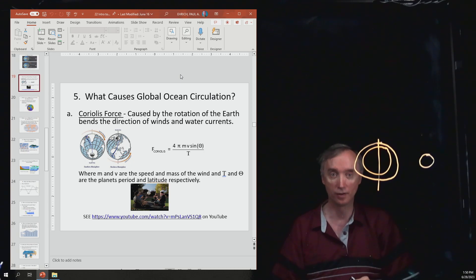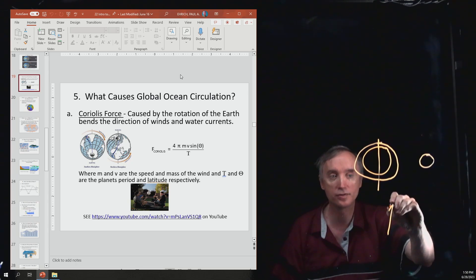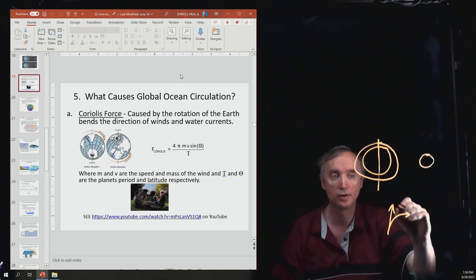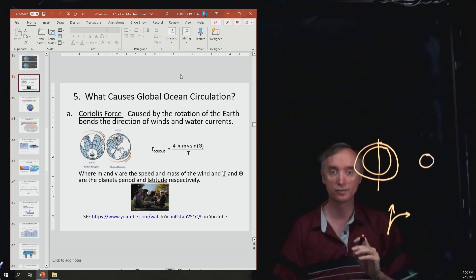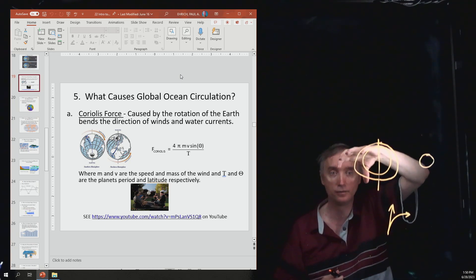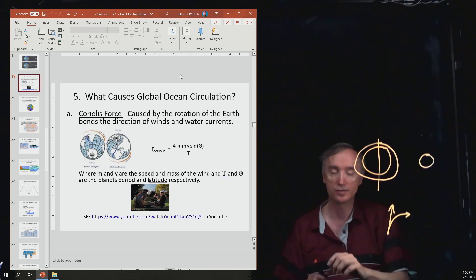So if a wind is trying to travel in this direction, that wind will be pulled off course by the Coriolis force. And that Coriolis force is caused by the spinning of the earth. Okay, so that's all that you need to know for it.